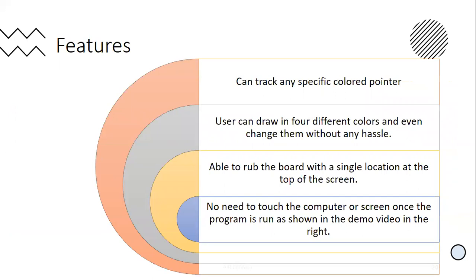The features of AIR Canvas include four important features. First, it can track any specified color pointer. Second, the user can draw in four different colors and even change them without any hassle. Third, it can clear the board with a single gesture at the top of the screen. Fourth, there is no need to touch the computer or screen once the program is run, as shown in the demo video.